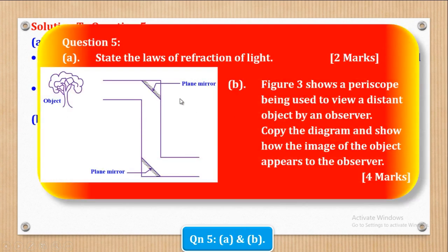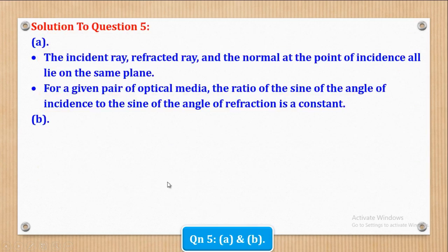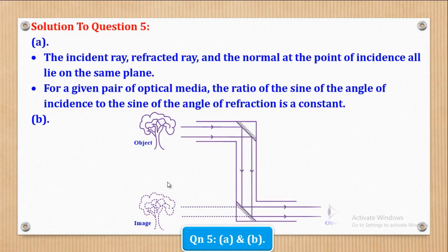Now we shall go to Part B. Part B says Figure 3 shows a periscope being used to view a distant object by an observer. Copy the diagram and show how the image of the object appears to the observer — four marks. The rays from the object are reflected by the first mirror to the second mirror, and from the second mirror they are reflected again to reach the observer, who sees these rays as though they are coming from the image of the tree.